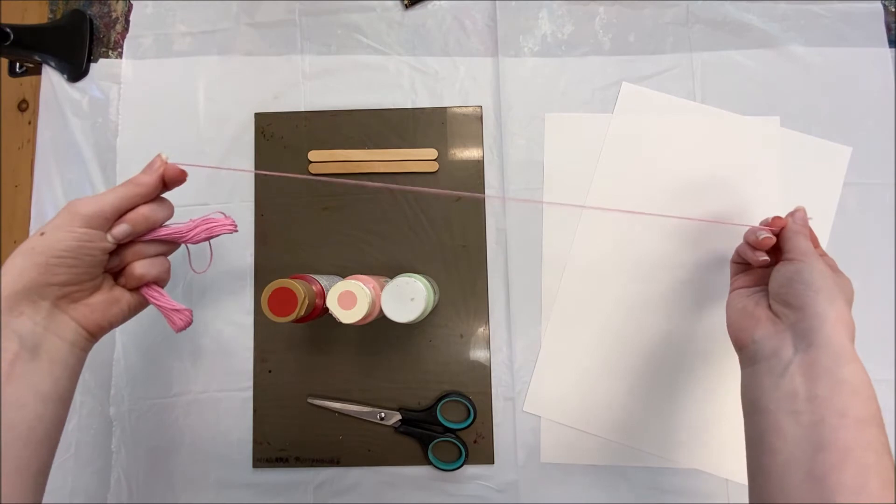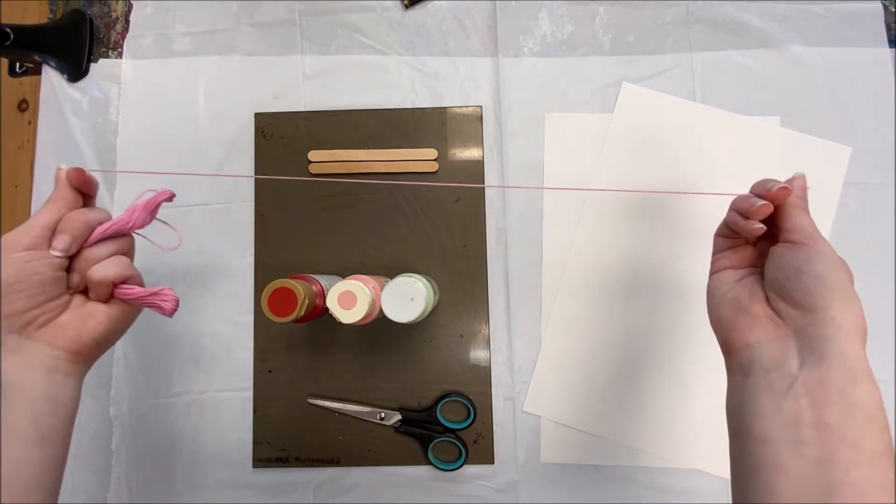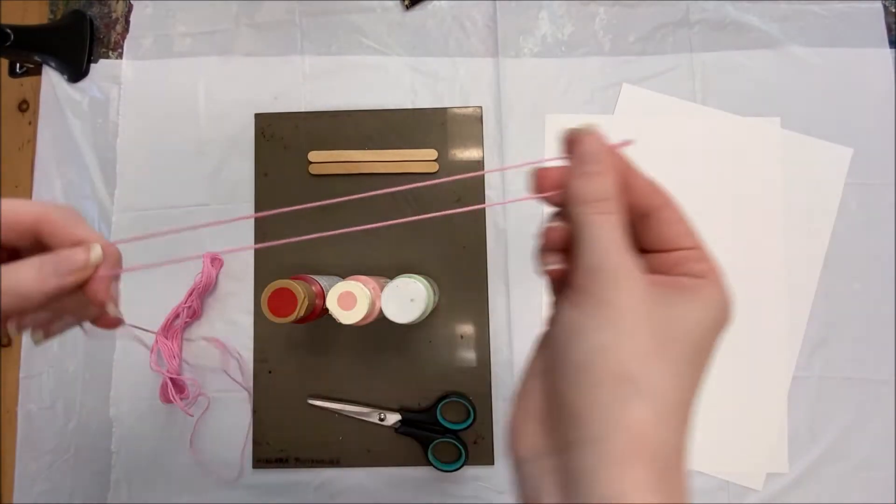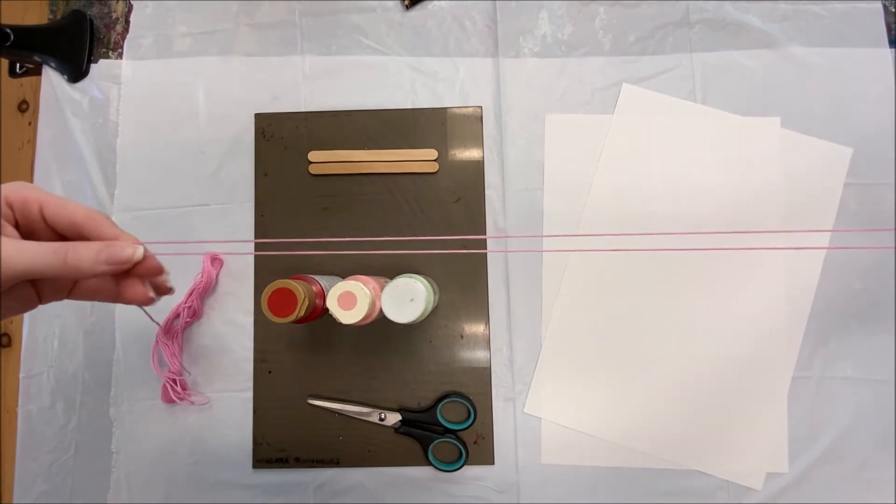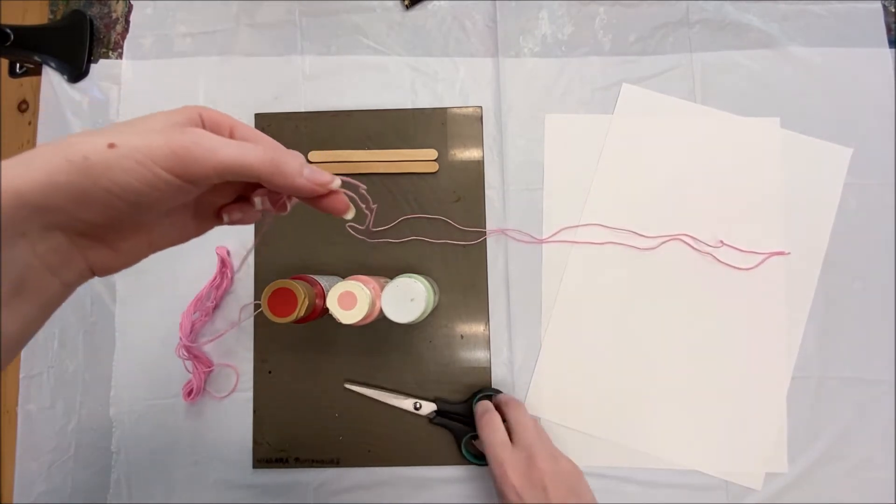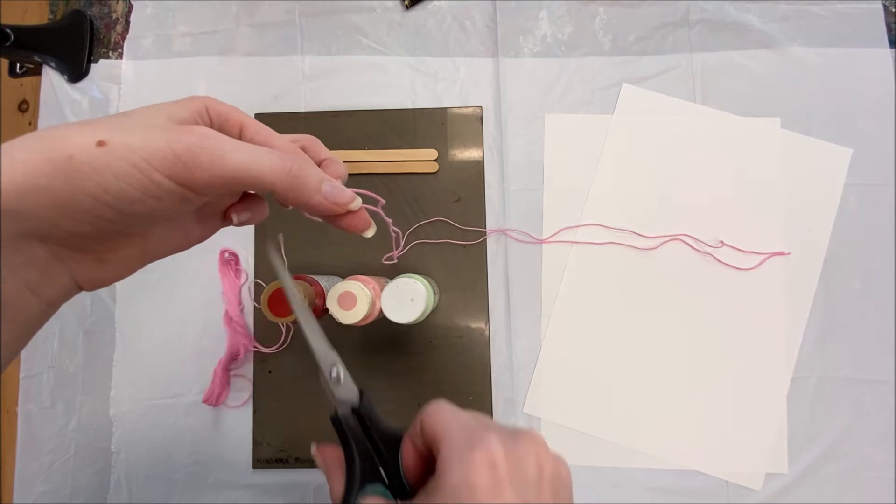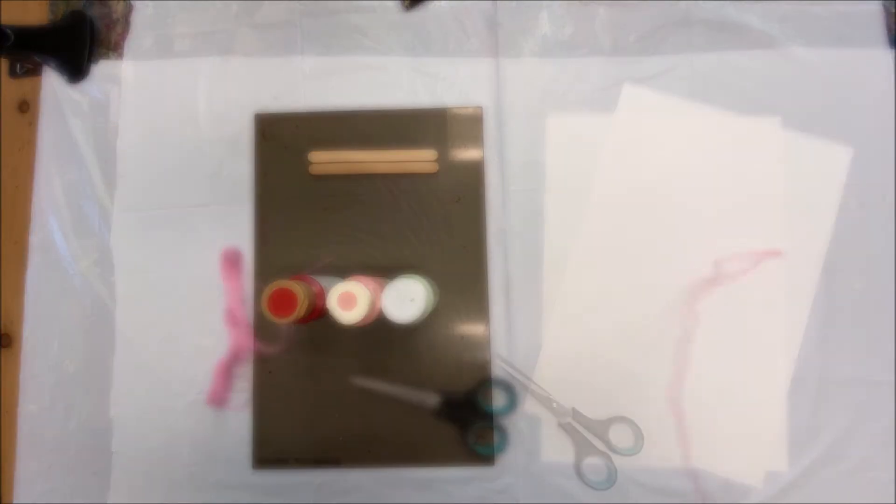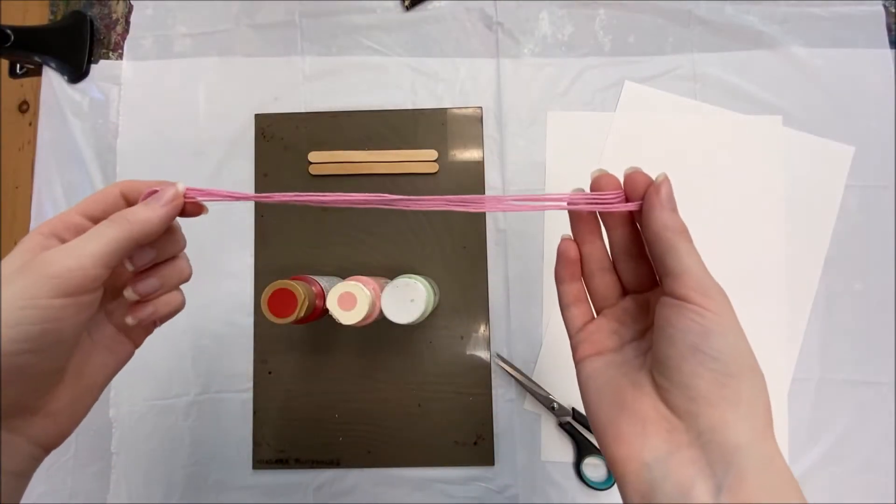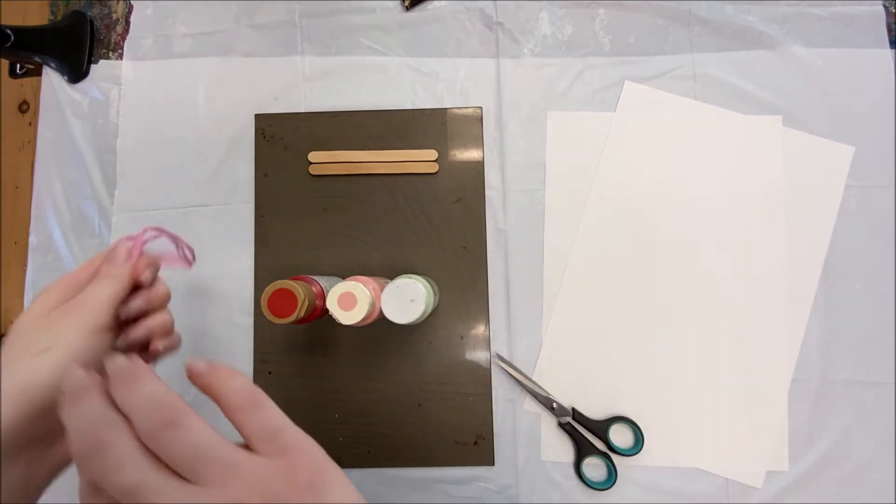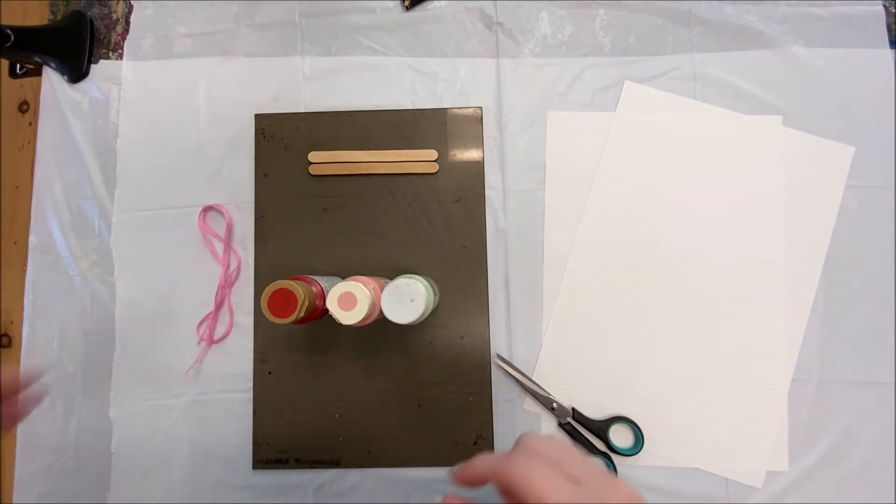Now that you have your first piece of string, we're going to use it to measure out two more. Once you have your string ready, we can set them aside and get our paint ready.